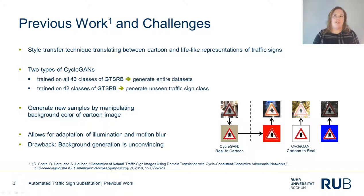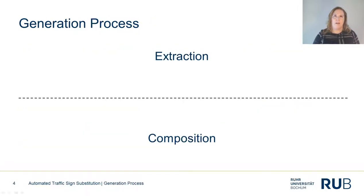But how to make sure everything fits together seamlessly? We decided to use original traffic sign images of the GTSRB and, while keeping the background, substituting the traffic signs by generated ones. Our generation pipeline is built around the already existing CycleGAN, so no further training routine is necessary. The process can be split into two parts: Extraction, in which we take all necessary information from a real-world sample, and Composition, in which we take a simple icon of the new traffic sign and reassemble the substitute.